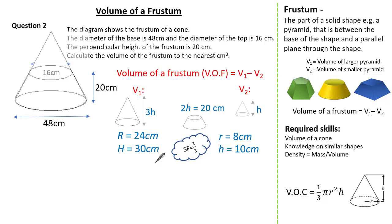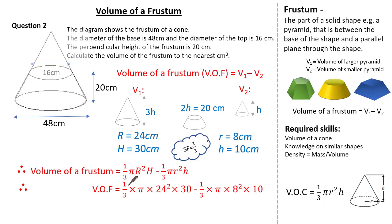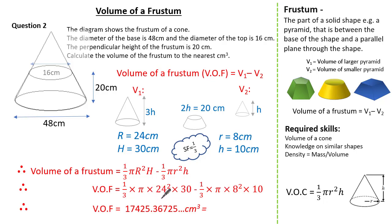Now we have enough information to apply our formula. Substituting our values in: one-third times pi times 24 squared times 30, subtract one-third times pi times 8 squared times 10, giving us an answer of 17,425.367... Given the question wanted us to round to the nearest cm cubed, our answer is 17,425 cm³.